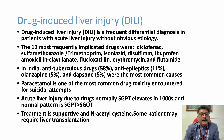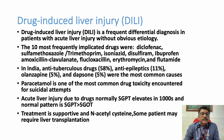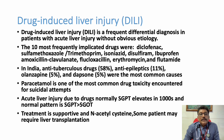The most important hepatotoxic drugs in our country are anti-tuberculous drugs. In western countries, the most common drugs producing hepatitis are paracetamol and NSAIDs due to their common use in rheumatological conditions. But in India, anti-tubercular drugs produce more hepatitis than any other drug.